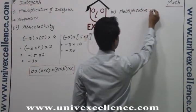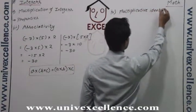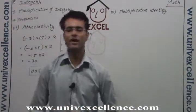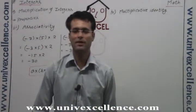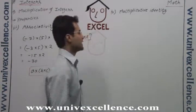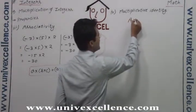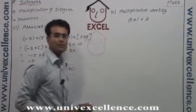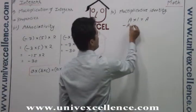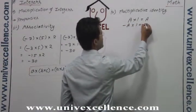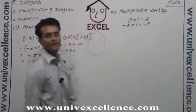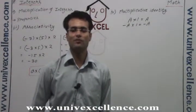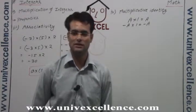Multiplicative identity. We have a multiplicative identity for every type of number, which is 1. Because if 1 is multiplied by any number, you get the same number again. If you multiply 1 by minus A, you get minus A again. So there is the existence of multiplicative identity for the integers.